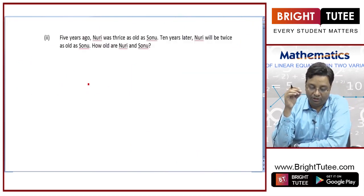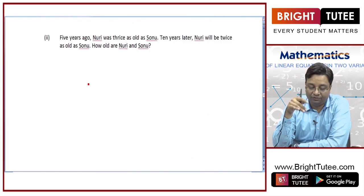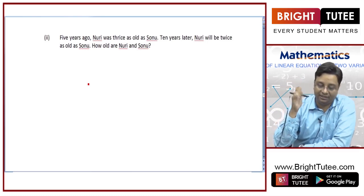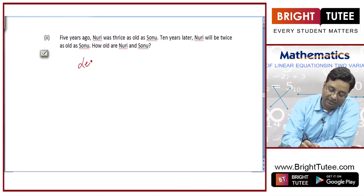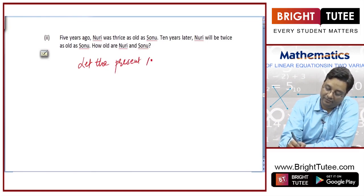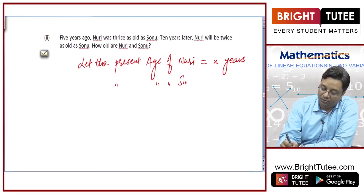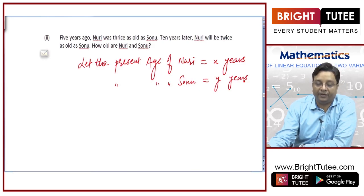5 years ago Nuri was thrice as old as Sonu. 10 years later Nuri will be twice as old as Sonu. How old are Nuri and Sonu? In such questions you always assume their present ages. Let the present age of Nuri be x years and the present age of Sonu be y years.